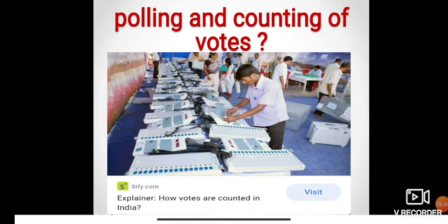They would count each and every ballot paper individually and record the particular votes. But after the introduction of the EVM, counting of votes became much easier compared to the traditional method. The data is already recorded in the machine, so when counting, they simply compile all the data and the final election result is declared by collecting data from each and every Electronic Voting Machine.